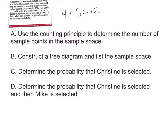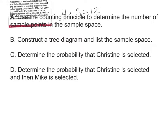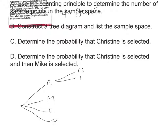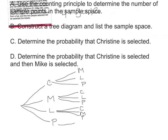Part B: Construct a tree diagram and list the sample space. There are Christine, Mike, Larry, and Phyllis. On the first draw, I could pull Christine, Mike, Larry, or Phyllis. On the second draw — if Christine was drawn first, I could get Mike, Larry, or Phyllis. If Mike was pulled first, I could get Christine, Larry, or Phyllis. If Larry was pulled first, I could get Christine, Mike, or Phyllis. If Phyllis was pulled first, I could get Christine, Mike, or Larry.